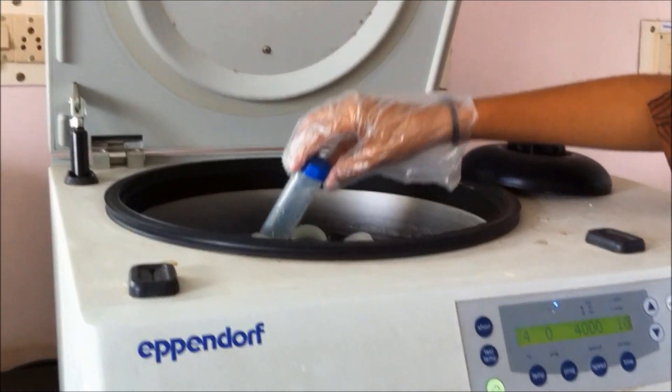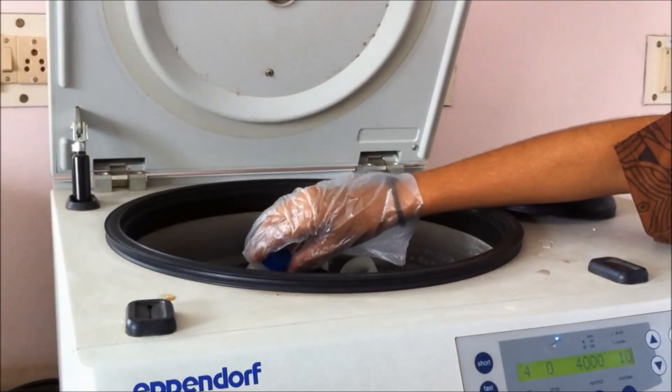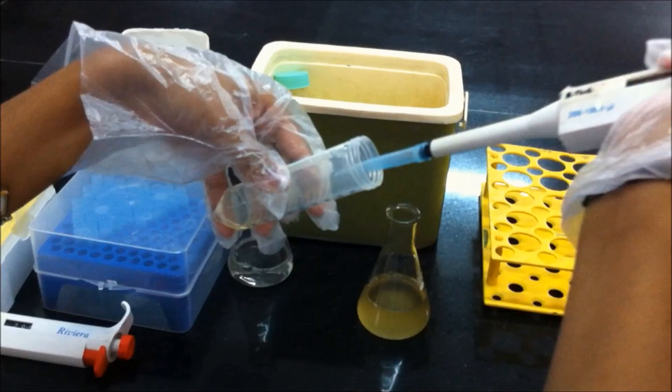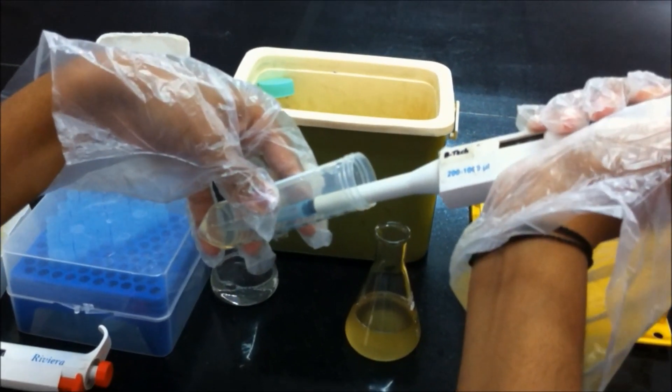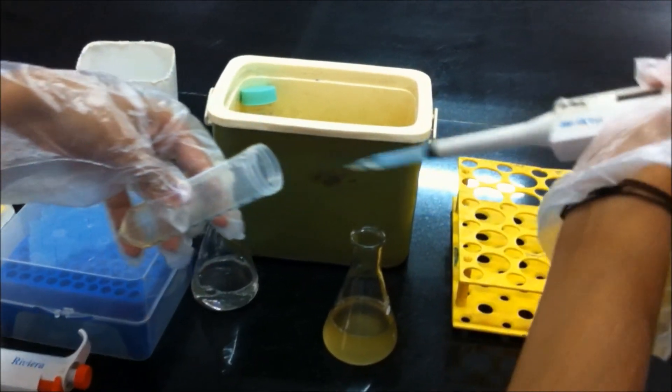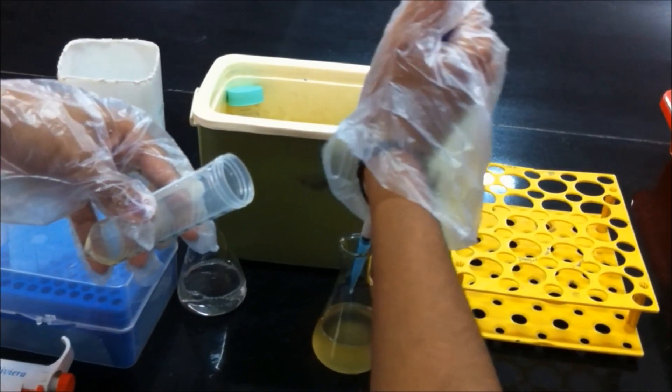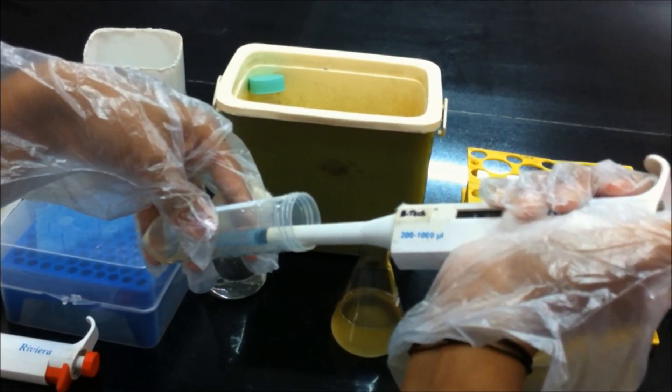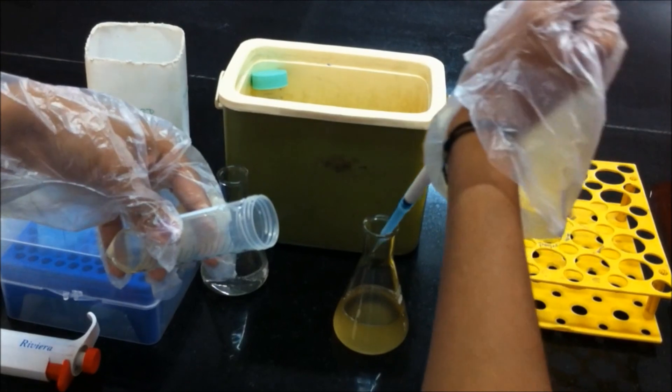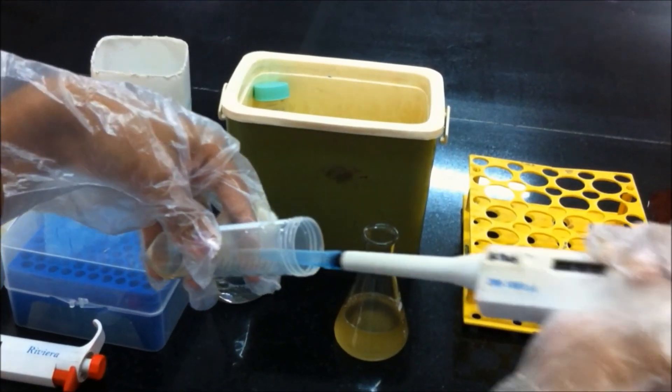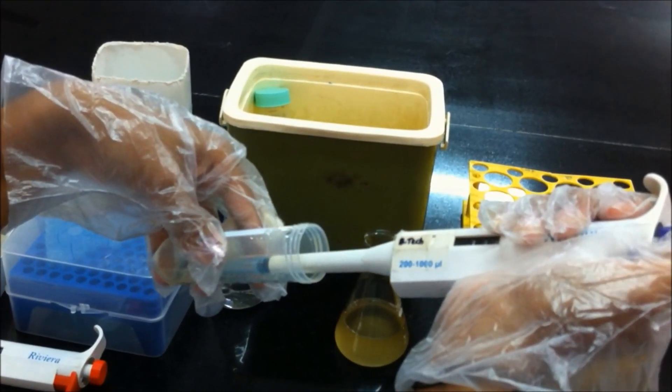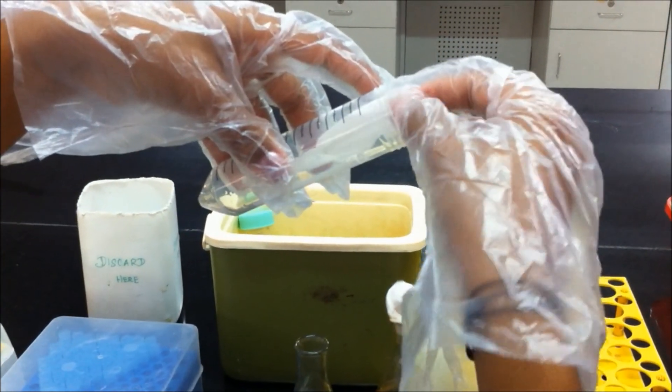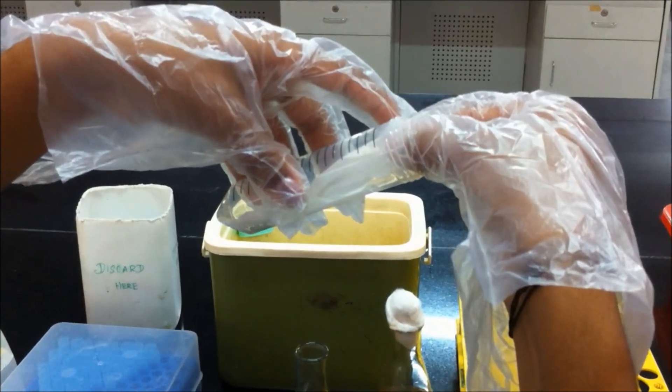Centrifuge at 12,000 rpm for 5 minutes. Decant the isopropanol and drain the pellet well. Blot excess liquid onto clean tissue paper or paper towel.